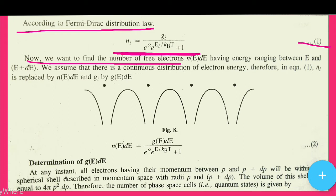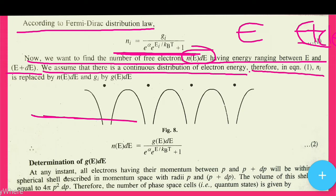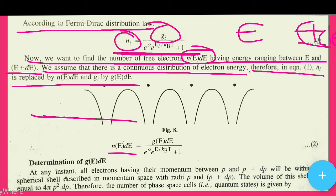Now we want to find n(E)dE, the number of free electrons having energy between E and E+dE. We assume a continuous distribution of electron energy. n_i is replaced by n(E)dE and g_i is replaced by g(E)dE. This is our equation number 2.